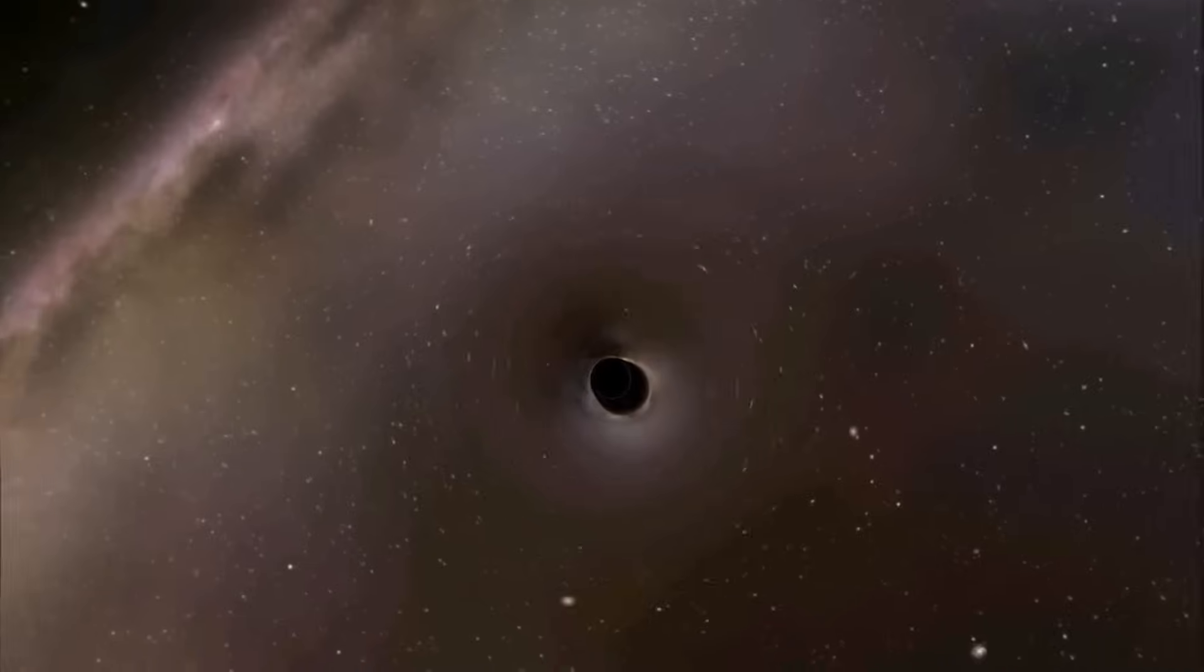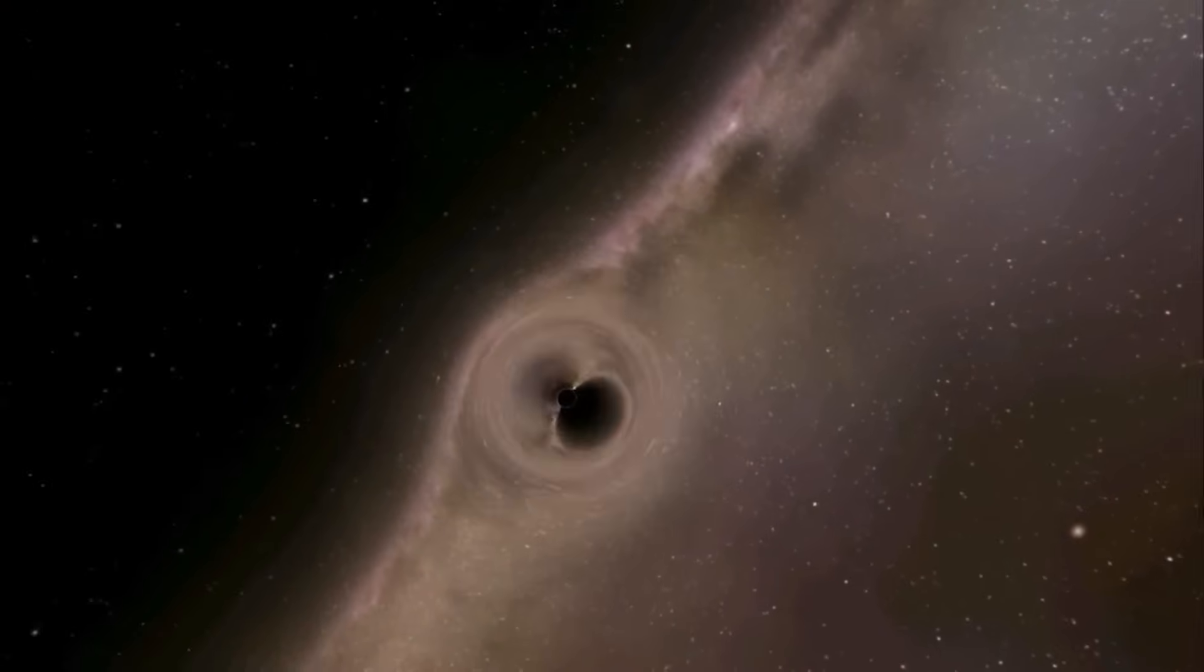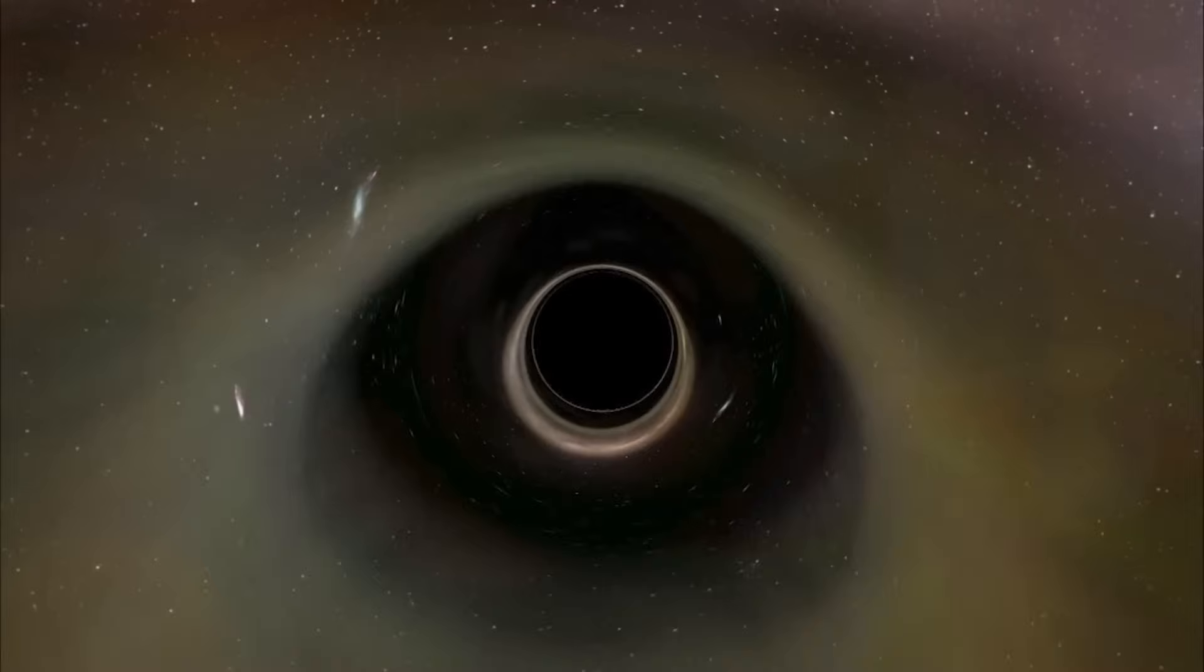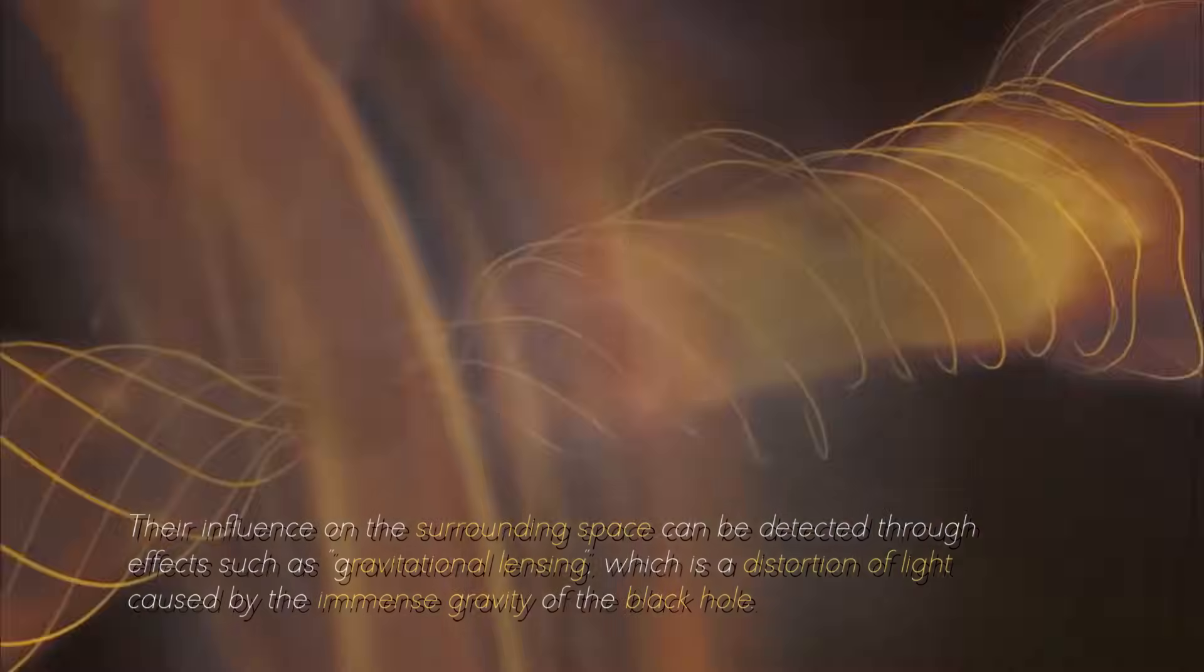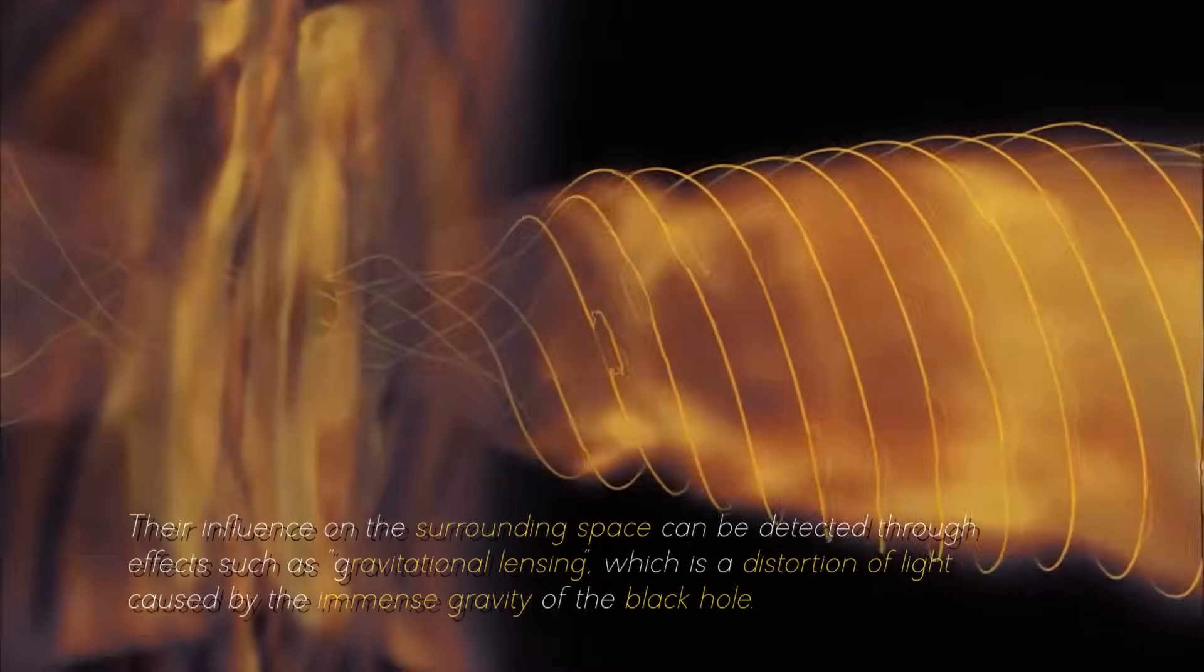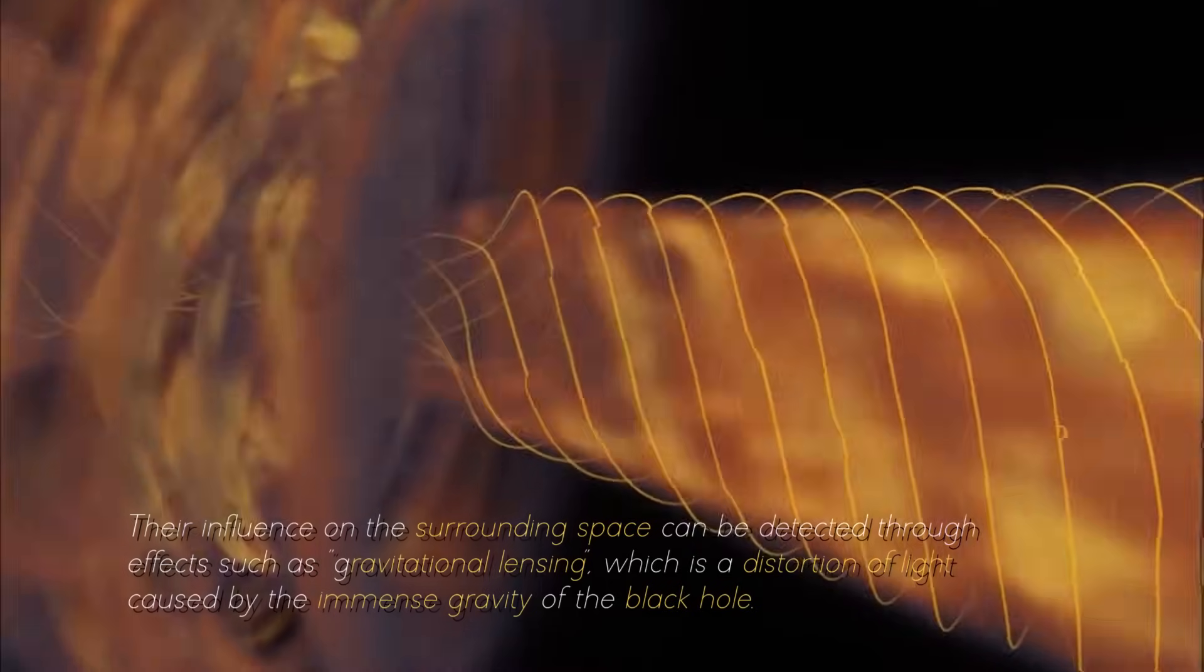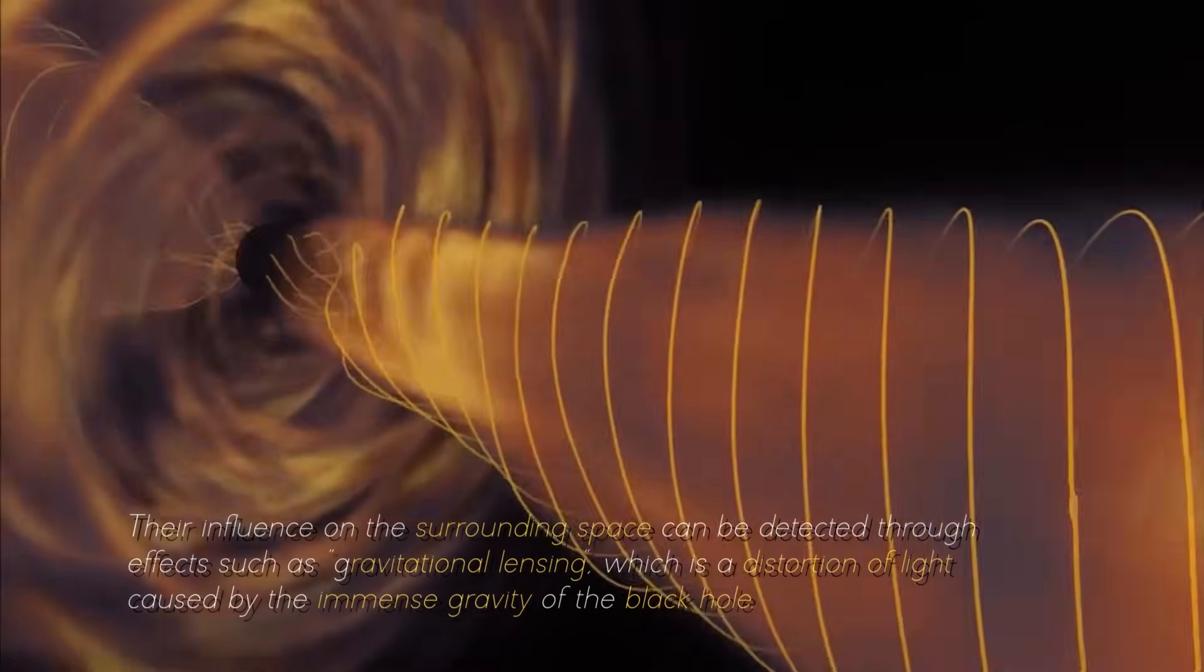The presence of an event horizon around black holes is what makes their direct study difficult, but this does not mean that it is completely impossible. Their influence on the surrounding space can be detected through effects such as gravitational lensing, which is a distortion of light caused by the immense gravity of the black hole.